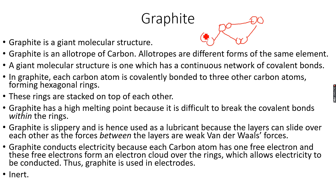Giant molecular structures have very high melting points and boiling points compared to simple molecular structures, because covalent bonds are strong whereas van der Waals forces and intermolecular forces are weak. Graphite is a giant molecular structure.